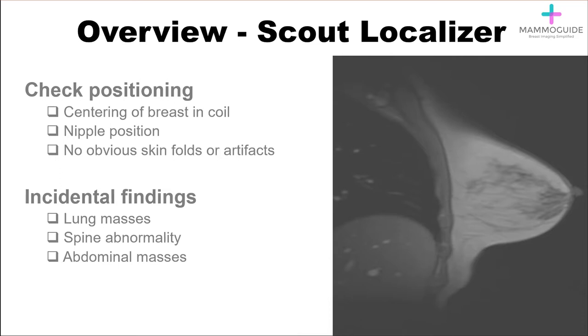Occasionally, you'll come across a large lung mass, a spine abnormality, or an abdominal mass that only shows up on the localizer images. They're rare, but certainly important.